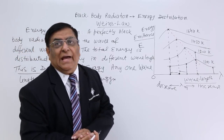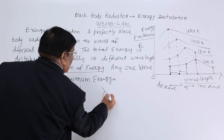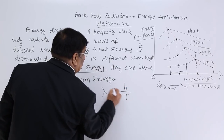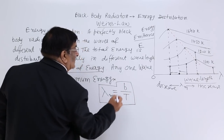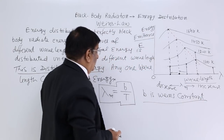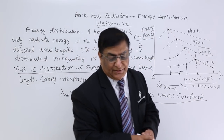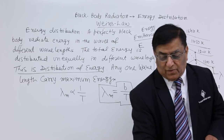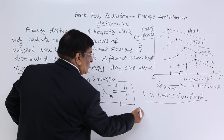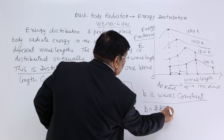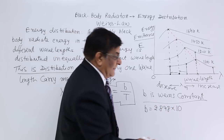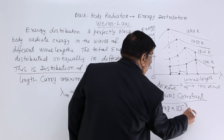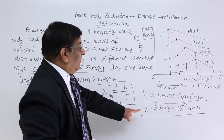This is Wien's law. If we make it equal, then lambda of maximum energy is equal to a constant divided by T. This constant is known as Wien's constant, denoted by B. Lambda multiplied by temperature gives a particular value. That value is B = 2.898 × 10⁻³, and its units are meter·Kelvin. This is the value of Wien's constant.